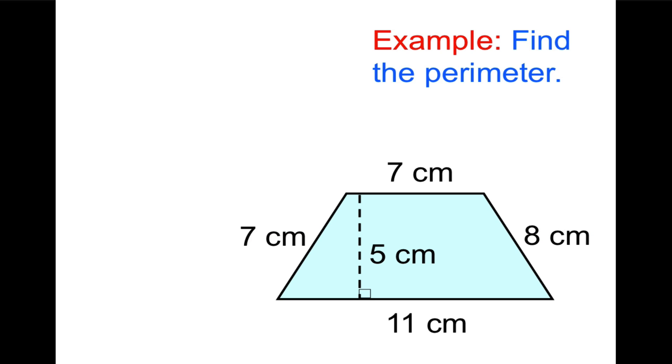For the perimeter, once again, we don't need the altitude. We're going to add the exterior sides. Seven plus eight plus seven plus eleven equals thirty-three. Thirty-three centimeters. All right. I think that about wraps it up. Good job.